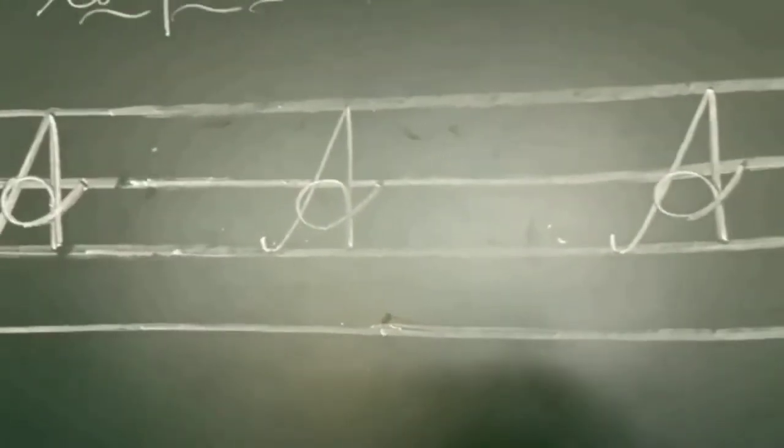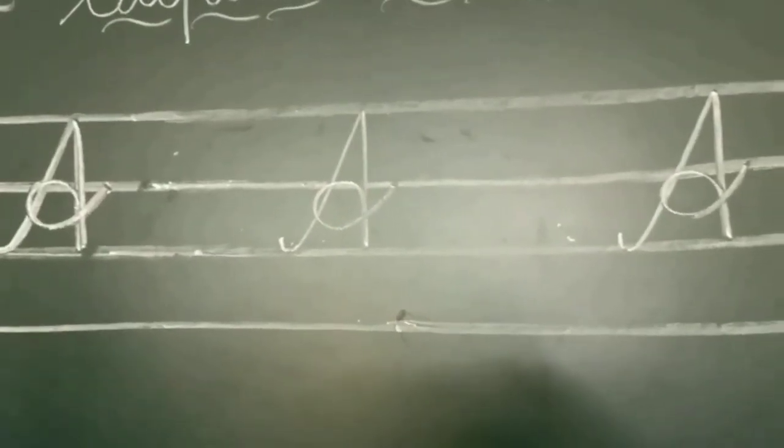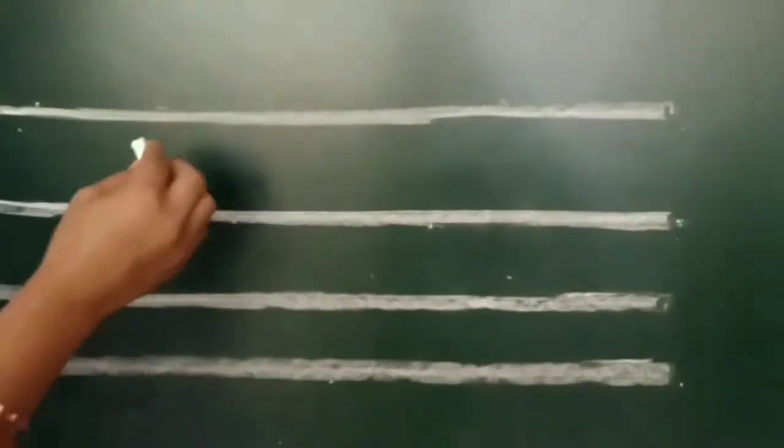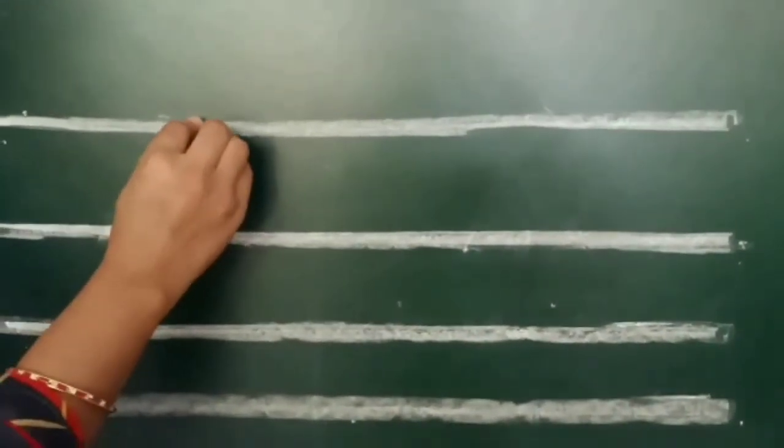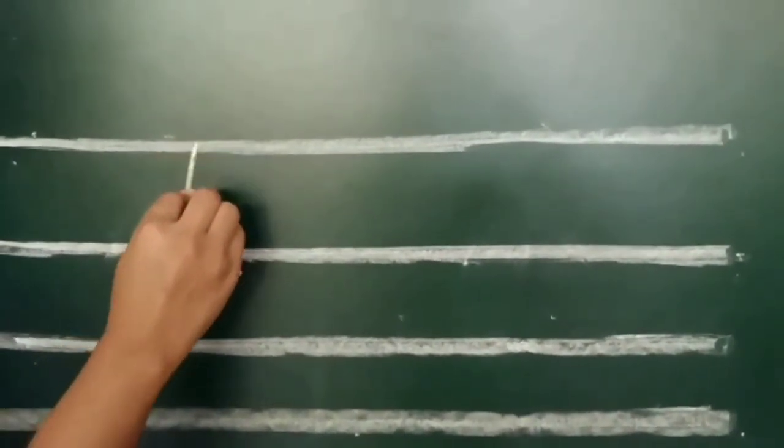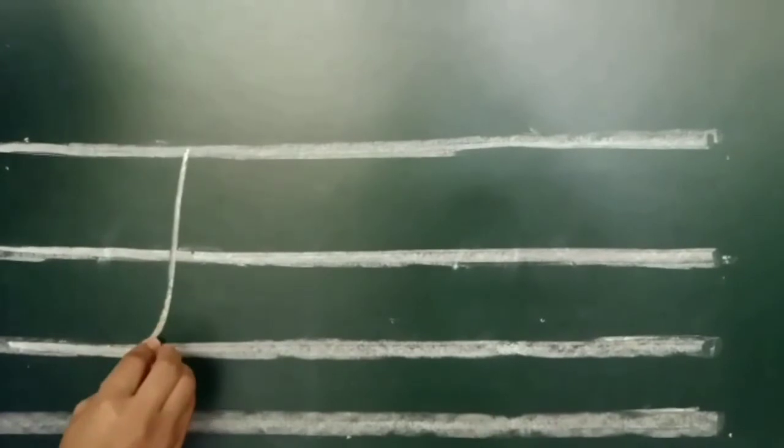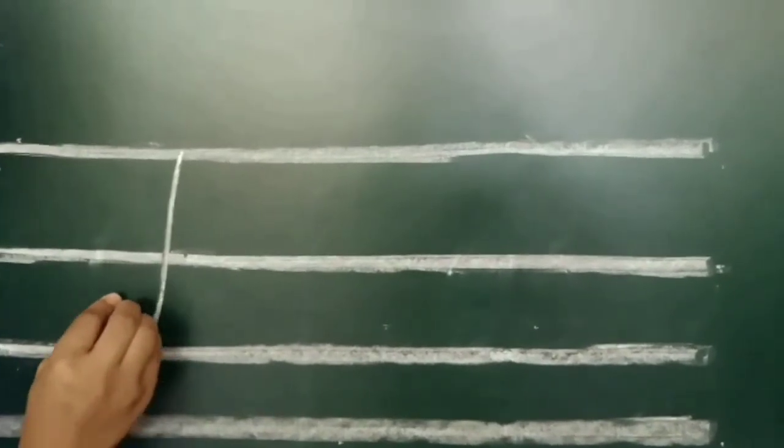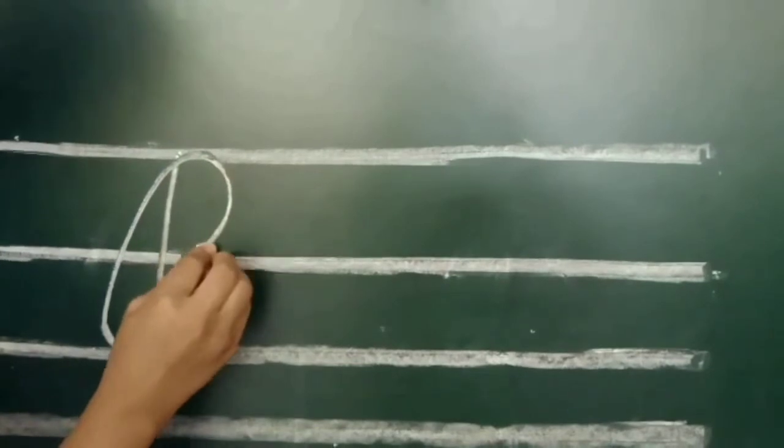Okay, next B. This is our cursive letter B. Make a slanting line from the top line to the line and make a curve and curve again.